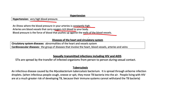Diseases of the heart and circulatory system. Circulatory system diseases are about the heart and the vessel system. Cardiovascular diseases are a group of diseases that involve the heart, the blood vessels, the arteries, and the veins — so the heart and circulatory system. Just know the difference between the two. You don't have to study the definition, but have a strong reading knowledge of it.